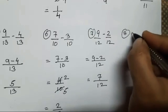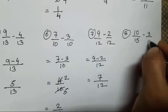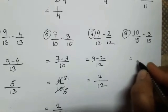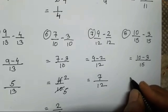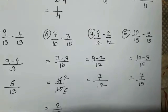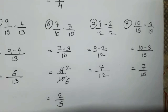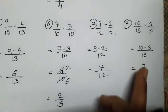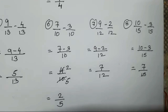The eighth and last sum is 10 upon 15 minus 3 upon 15. Denominator 15, 10 minus 3 means 7 upon 15. Can we divide it? No, we cannot. 7 and 15 cannot be divided with a single table. If it would have been 14, then we would be able to divide it, but 7 and 15 are not divided with a single table. So this is your answer.